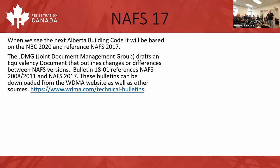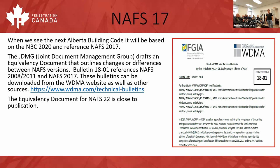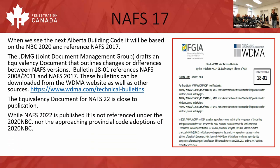Within the JDMG there are equivalency documents that outline the changes from version to version. It's really great to understand what those are because they can have an impact on how and what you're going to test and what's going to be compliant. NAFS 2008, 2011, and 2017 are referenced in Bulletin 1801, available off the WDMA website. The equivalency document for NAFS 22 is just about ready — I sit on that group on the CSA side — and should be published very soon.